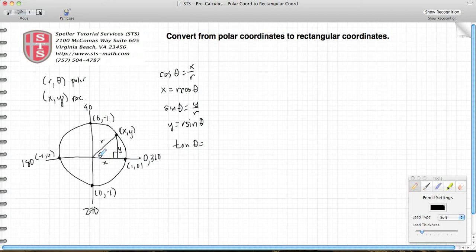Last but not least, let's look at tangent θ. Tangent's relationship is opposite over adjacent, so that would be y over x. Using this information, we see that the x coordinate can also be expressed as r cos θ, and the y coordinate can be expressed as r sin θ.